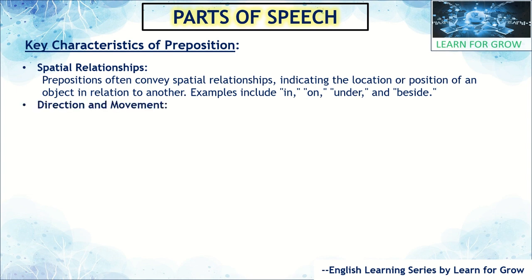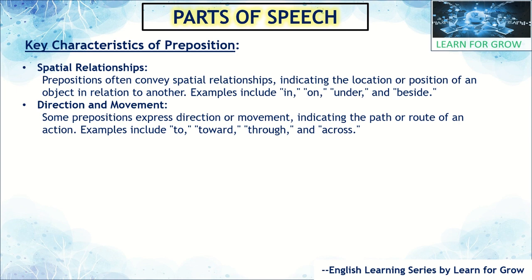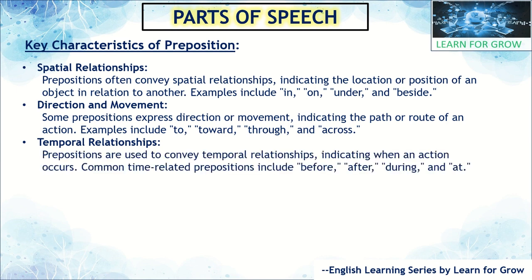Some prepositions express direction or movement, indicating the path or route of an action. Examples include: to, towards, through, across. These are the prepositions used when showing direction or movement. Next is temporal relationship — prepositions are used to convey temporal relationships indicating when an action occurred. Common time-related prepositions include: before, after, during, at.